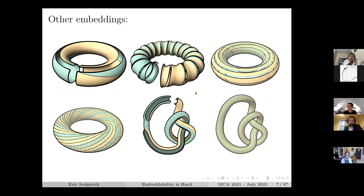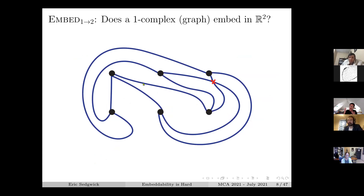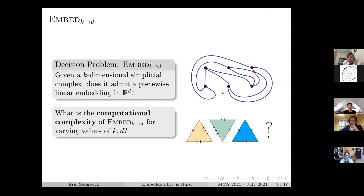This isn't the easiest embedding question along these lines. We could also ask the embedding question about a one-complex into two-space - basically asking is a graph planar? Here we see K33, the complete bipartite graph with three vertices on each side, and that is not a planar graph. You can vary the dimension of the complex and the dimension of the ambient space and ask this question across all those parameters.